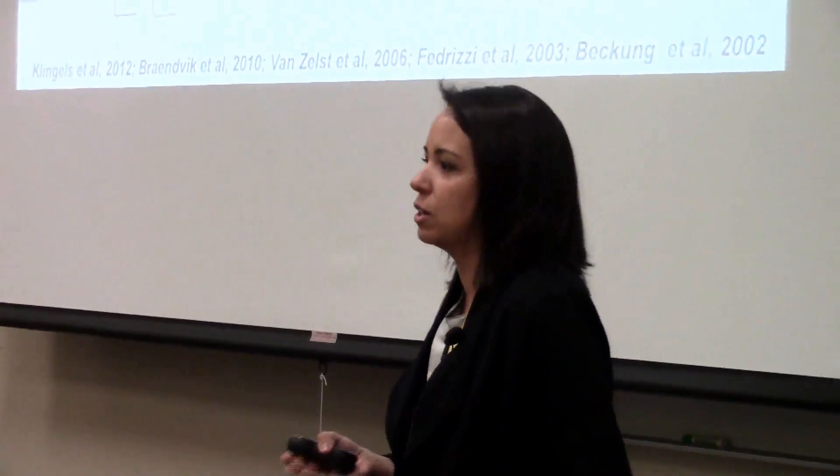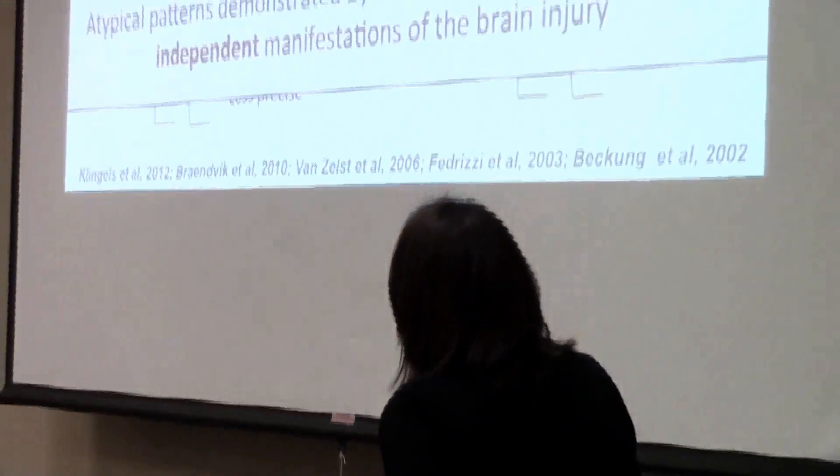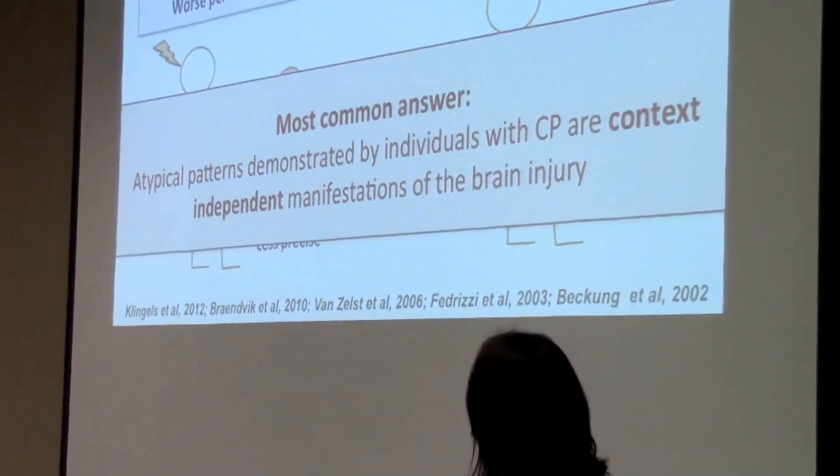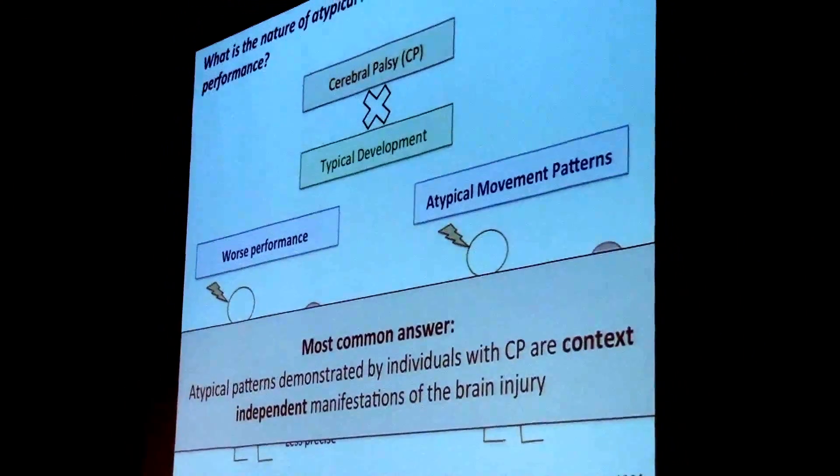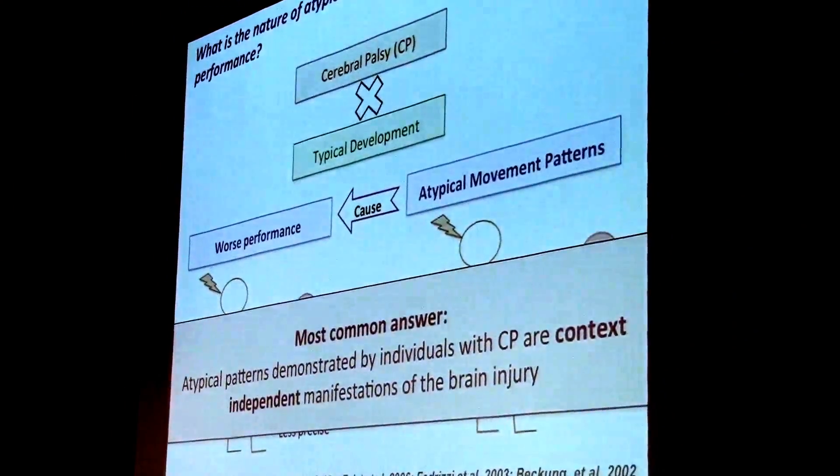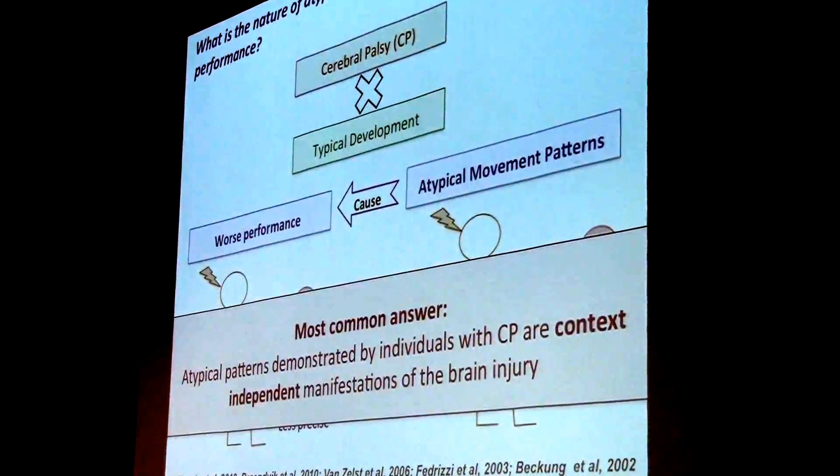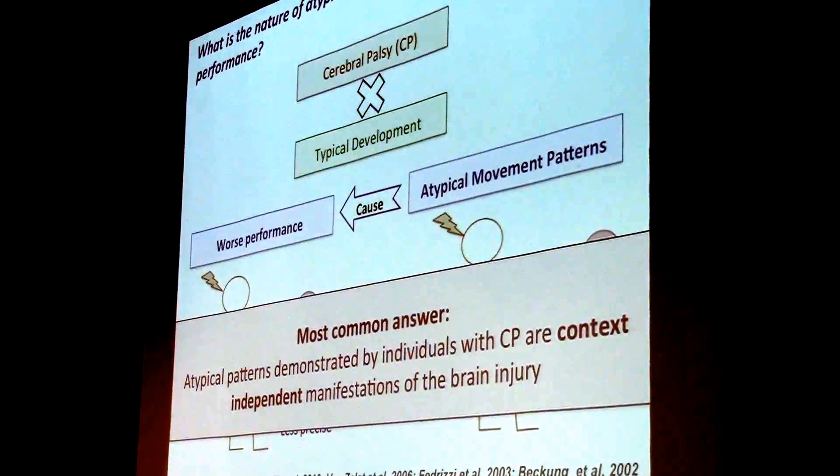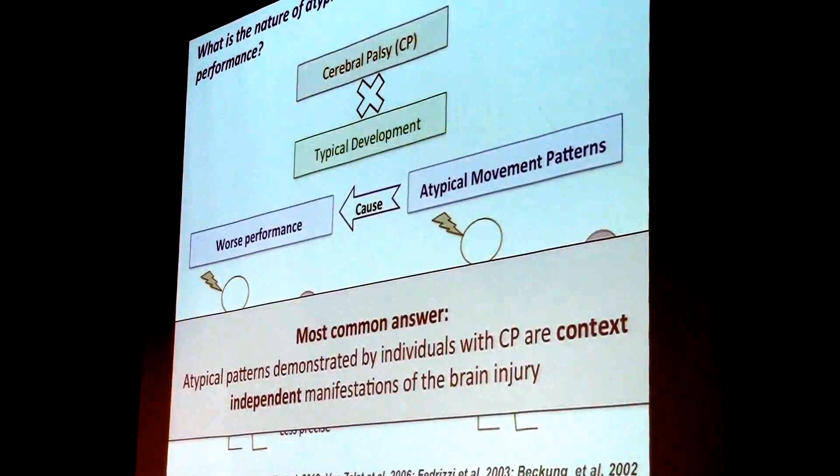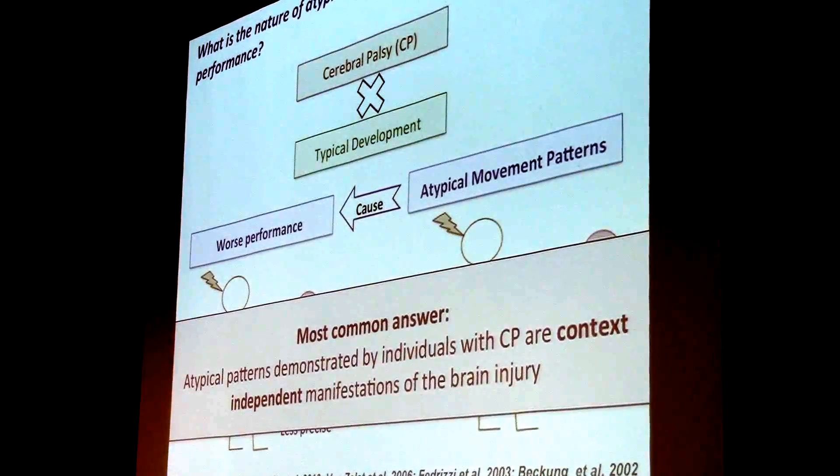The most common answer you find, in particular in the rehabilitation literature, is that these atypical patterns are context-independent manifestations of the brain injury and that they are the cause of worse performance. So a very direct, linear relation is made between component movement and performance. And not surprisingly, people try to target or normalize atypical patterns to get improved performance.